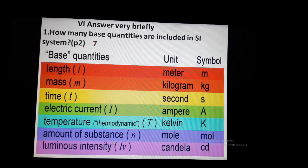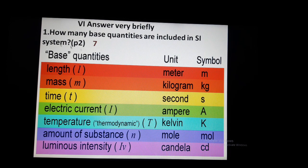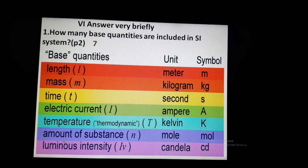Short answer question: how many base quantities are included in the SI system? There are seven base quantities in the SI system. They are: length, mass, time, electric current, temperature, amount of substance, and luminous intensity. These seven are all the fundamental or base quantities.